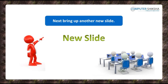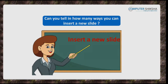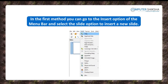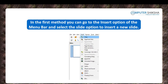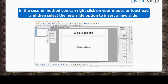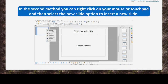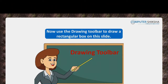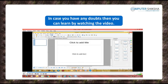Next, bring up a new slide. You can insert a new slide in two ways. In the first method, go to the Insert option of the menu bar and select the Slide option. In the second method, right-click on your mouse or touchpad and select the New Slide option. Now use the Drawing Toolbar to draw a rectangular box on this slide and change its formatting as shown. If you have any doubts, watch the video.